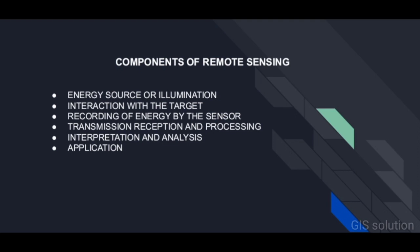The second component is interaction with the target. Once the energy makes its way to the target through the atmosphere, it interacts with the target depending on the properties of both the target and the radiation. Third is recording of energy by the sensor — after the energy has been scattered by or emitted from the target, we require a sensor to collect and record the electromagnetic radiation.